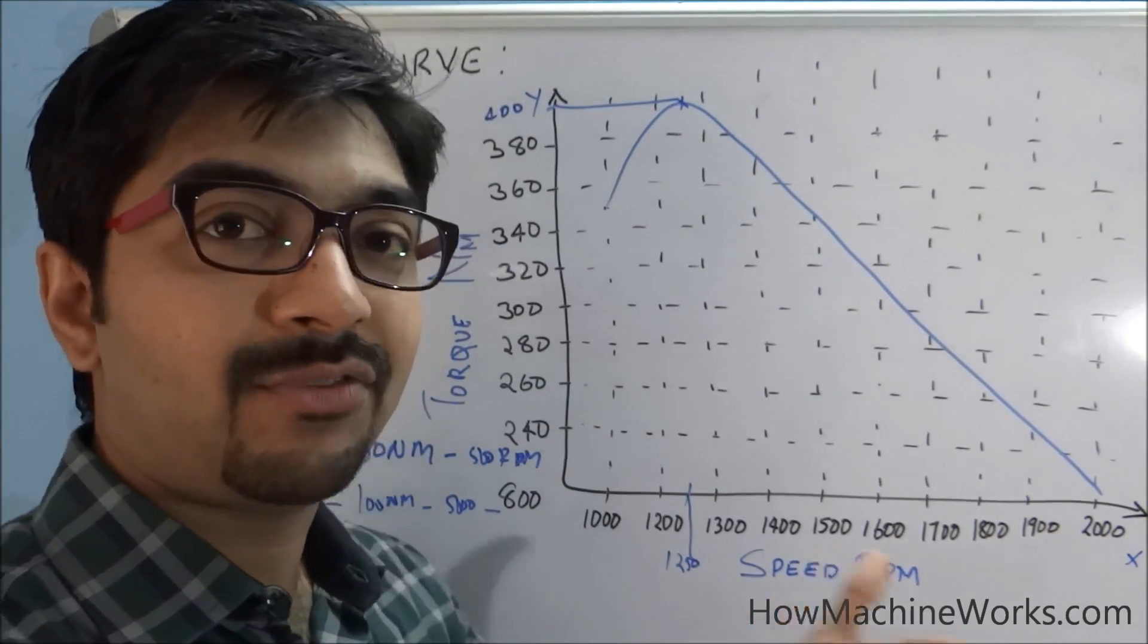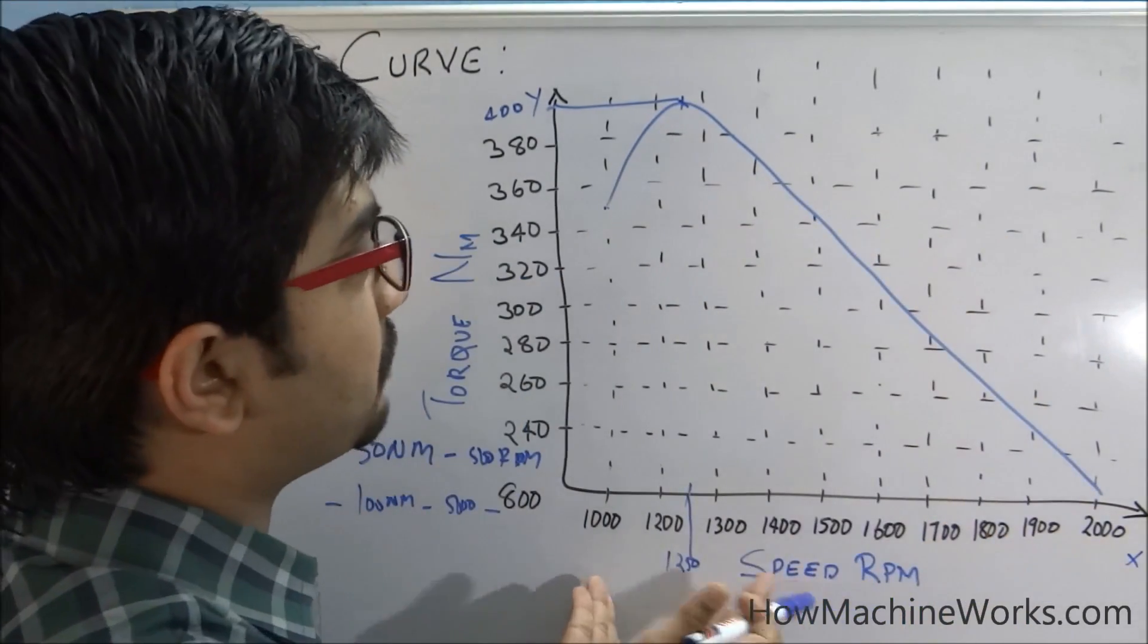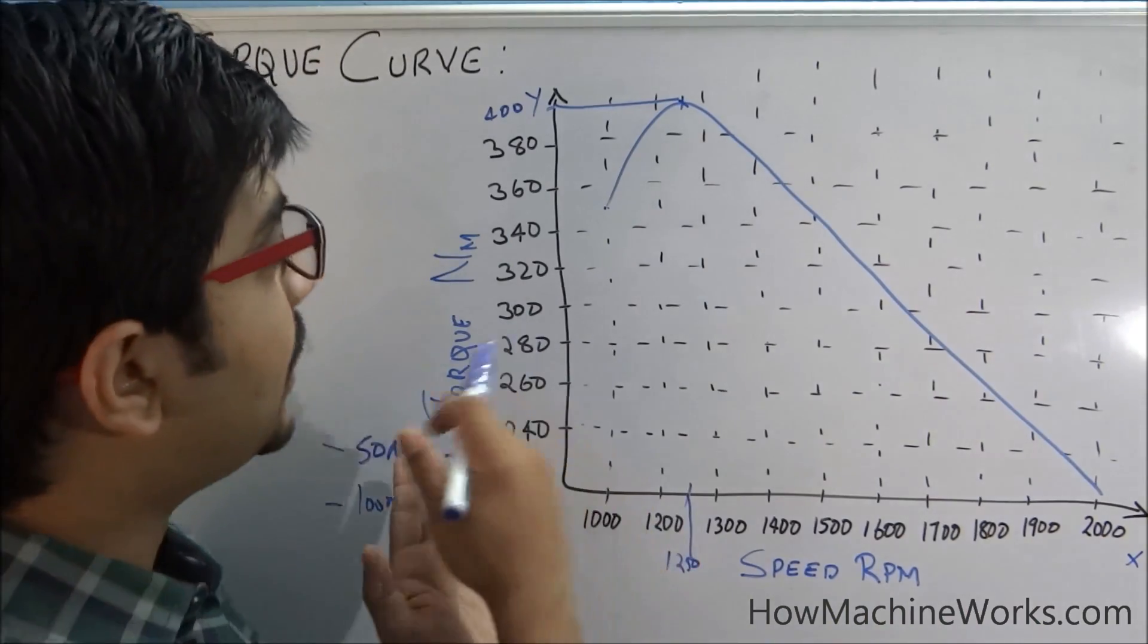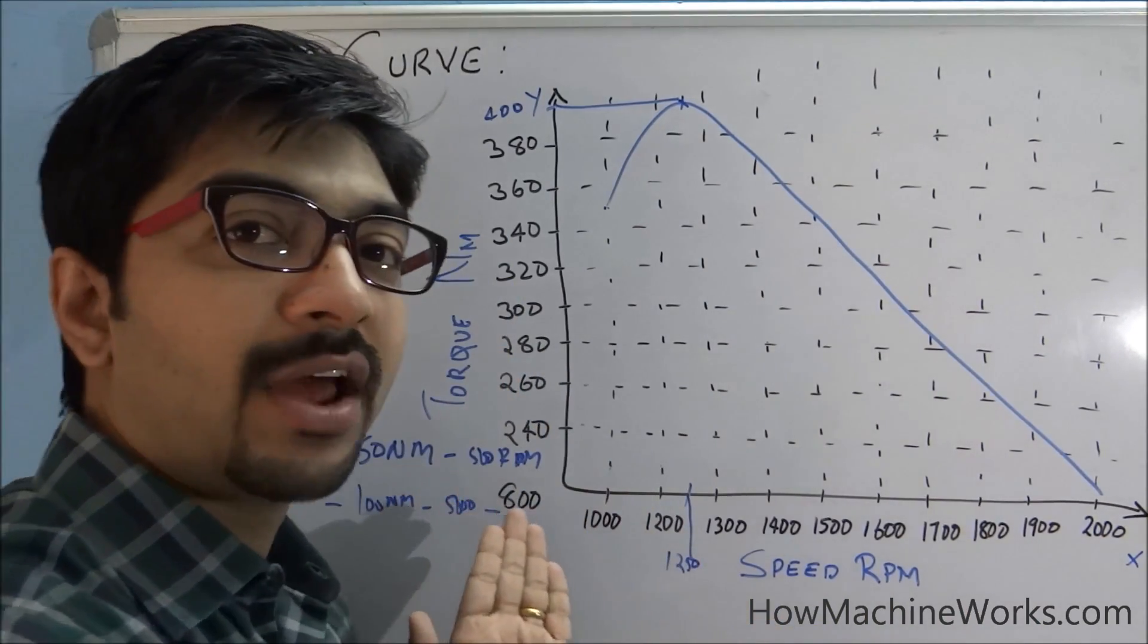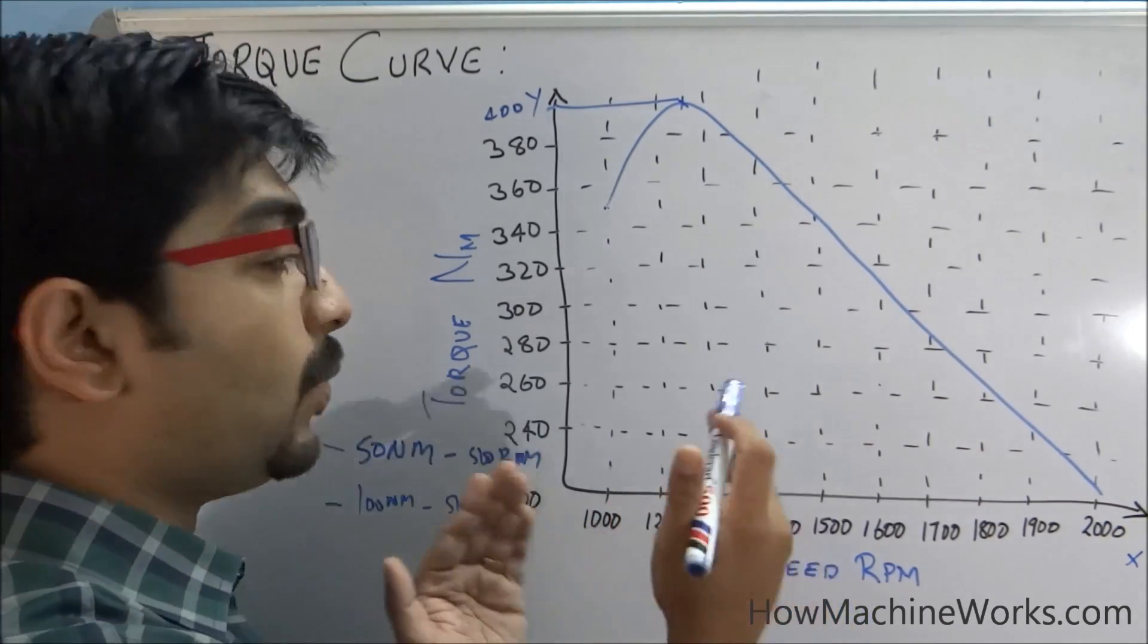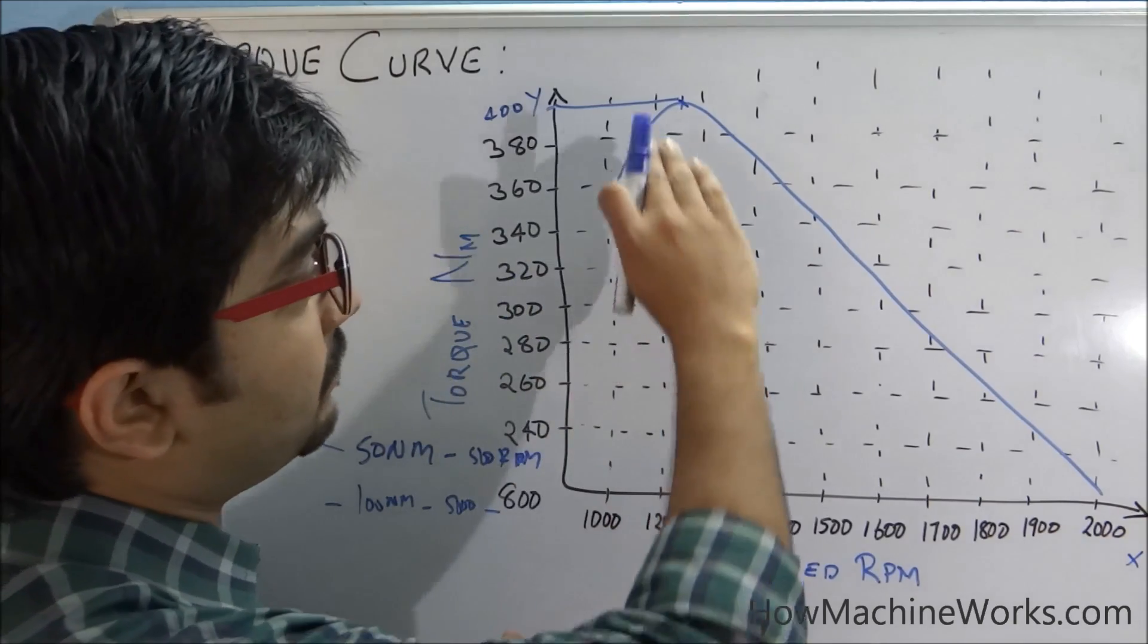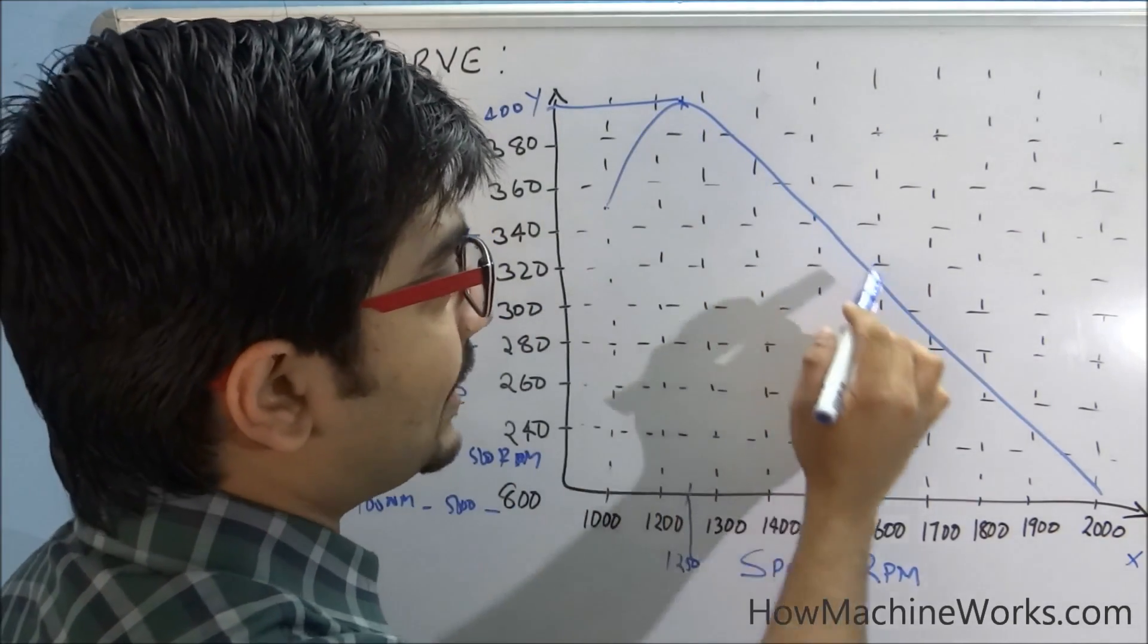So this is a basic graph representation. On each vehicle and each engine, there will be a torque and speed graph representation which shows which particular RPM is the vehicle providing or able to deliver you the maximum torque, and from which point the torque will tend to reduce as the RPM increases.